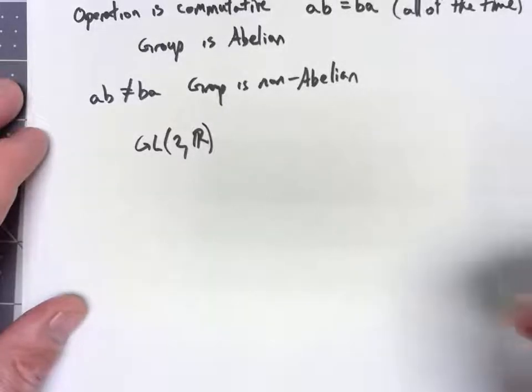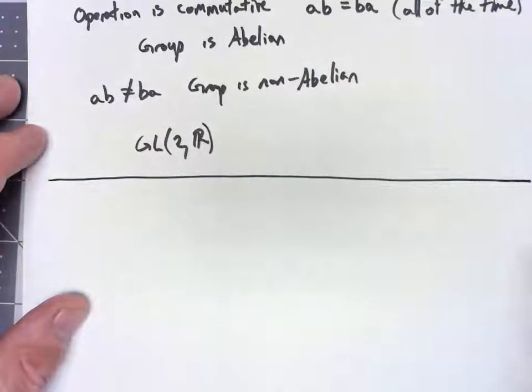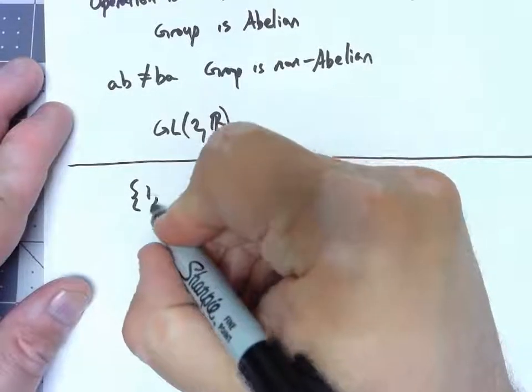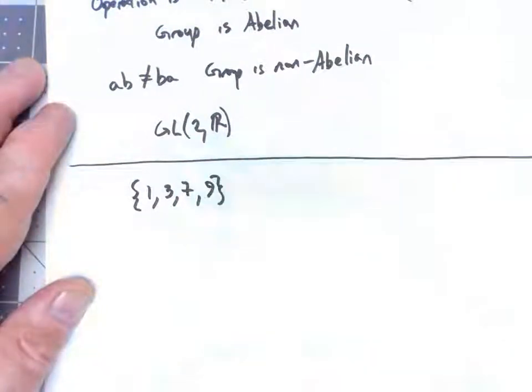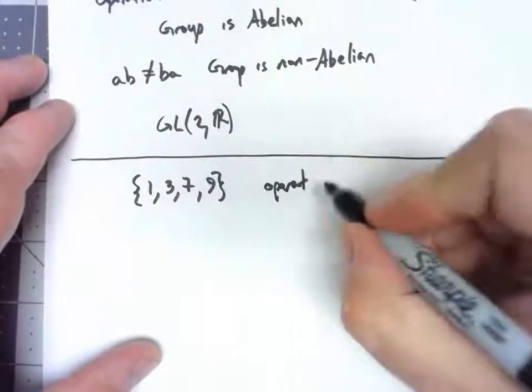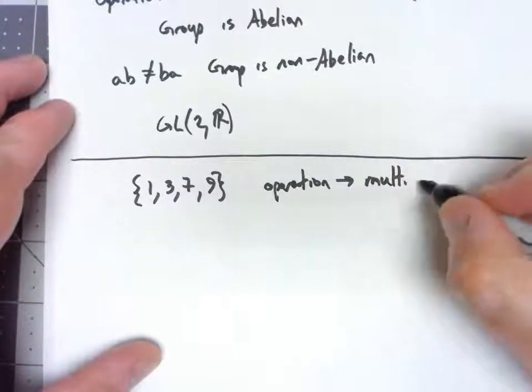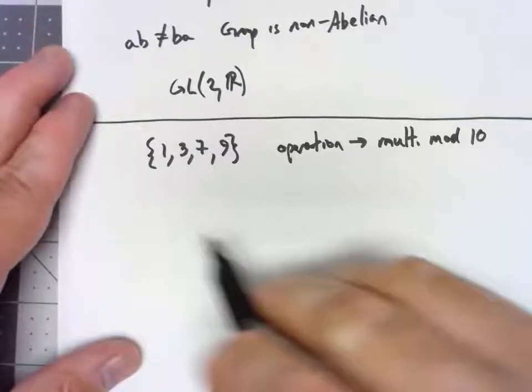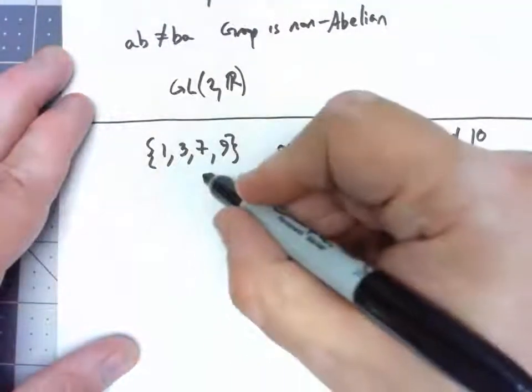But now I want to take a look at an example of a group that is commutative. The set I'm going to look at only has four elements: 1, 3, 7, and 9. And the operation is multiplication mod 10. Because we have such a small set of elements, it's very easy to create a Cayley table for this. So that's what I'm going to do.